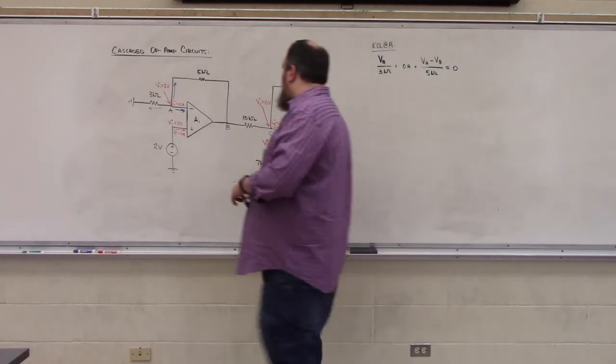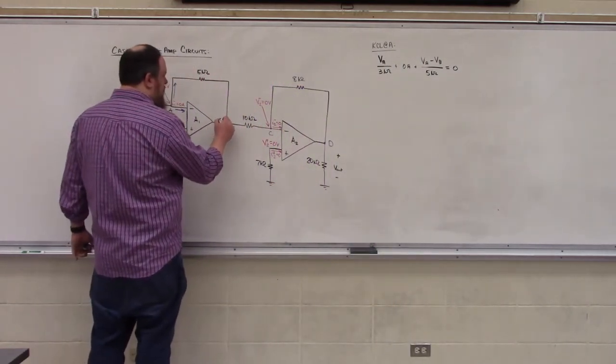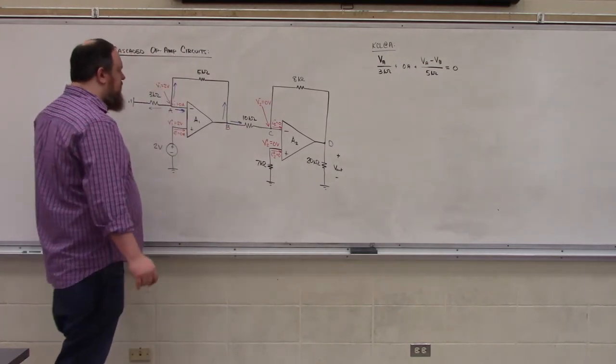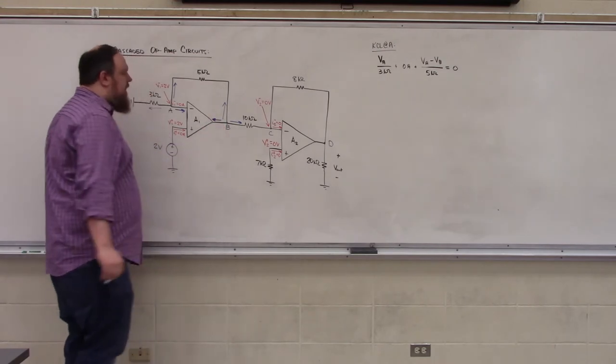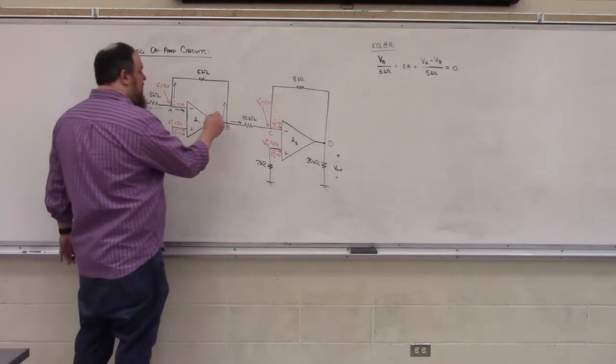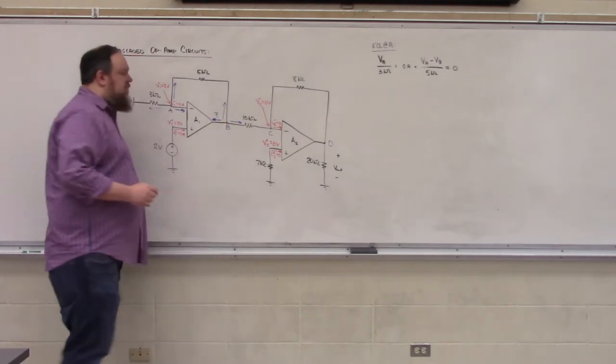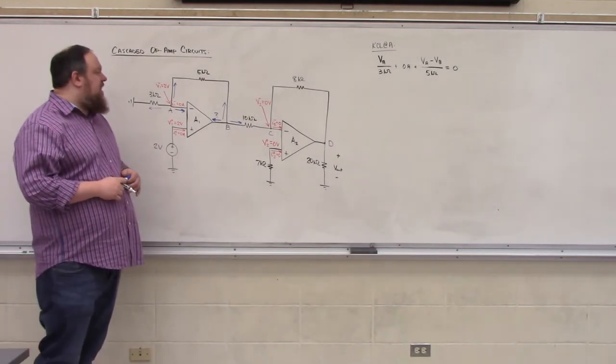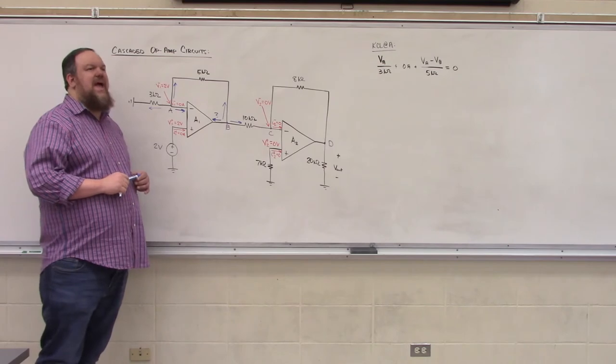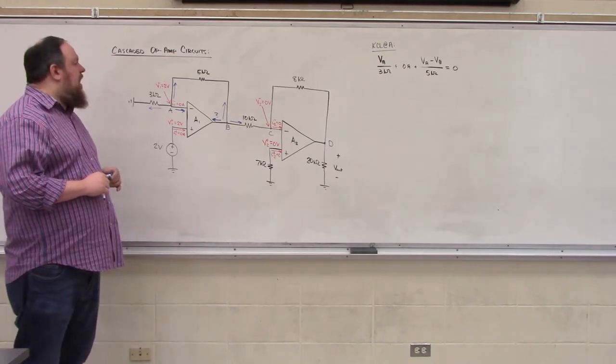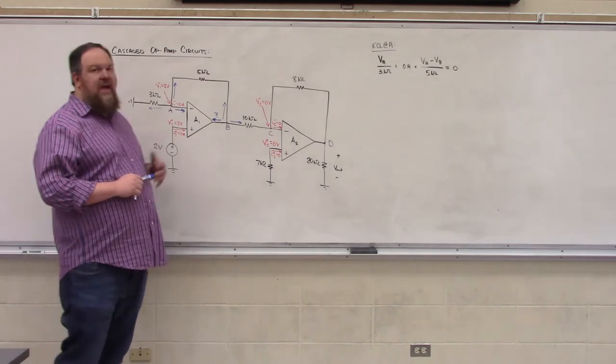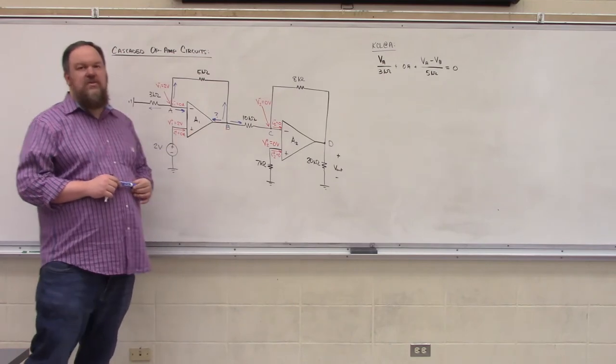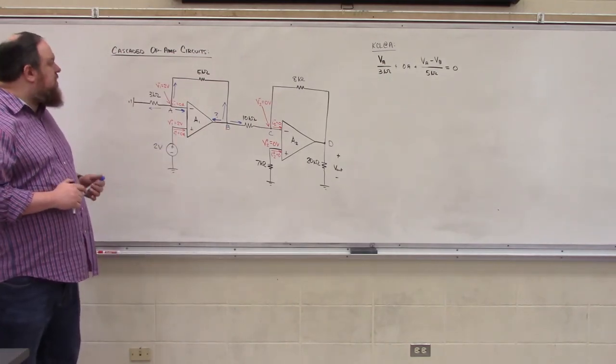If we try to apply KCL at node B, we're going to run into a little bit of a problem. The current flowing up is well defined. The current flowing to the right can be described using our node voltages. But the current flowing into the output terminal of our op amp, we have no way to quantify that in terms of our node voltages. What we're going to find is that we can never actually perform Kirchhoff's current law at the output of an operational amplifier when we're using the ideal op amp model.